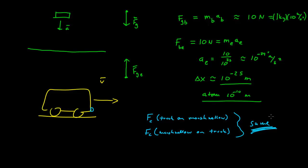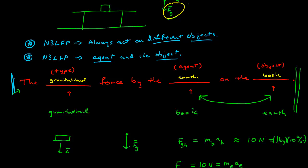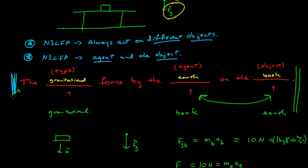The only way to get used to this is lots of practice. The key point is to stay with this construction: Newton's Third Law force pairs always act on different objects, and they relate to the fact that one force has an agent acting on an object — and the Third Law pair is that object becoming the agent and exerting the same type of force back in the opposite direction. Keep that in mind and you'll be able to identify your Newton's Third Law force pairs.